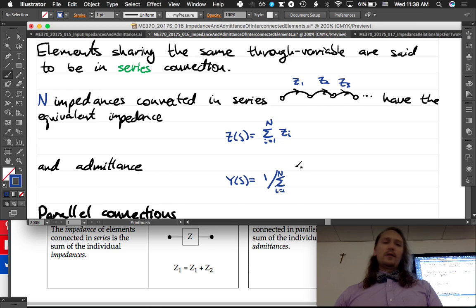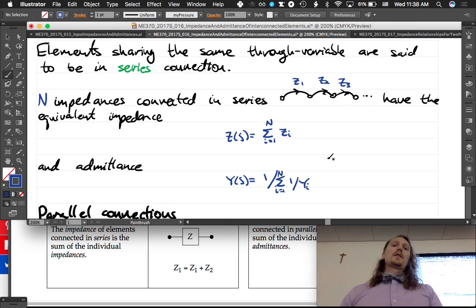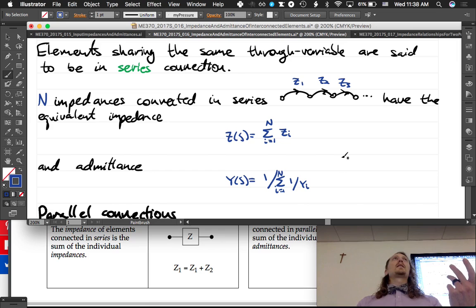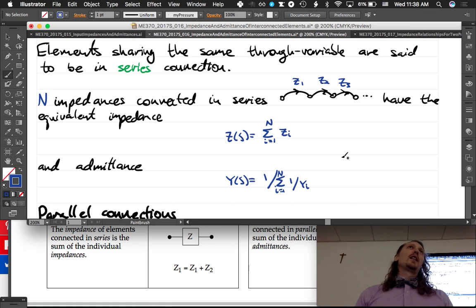And the admittance is 1 divided by the sum from i equals 1 to big N of 1 over y_i. Well that's a weird y, I don't like that. I'm going to go back. There we go, that's better. So it reminds us a lot of talking about electrical impedance and admittance as well.